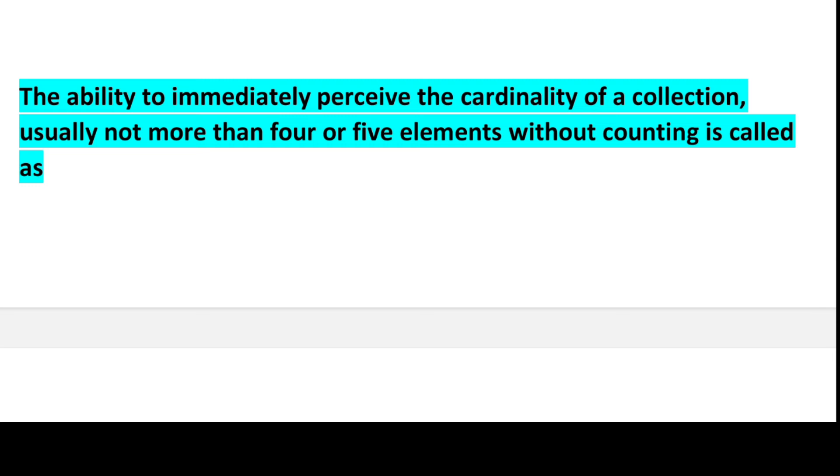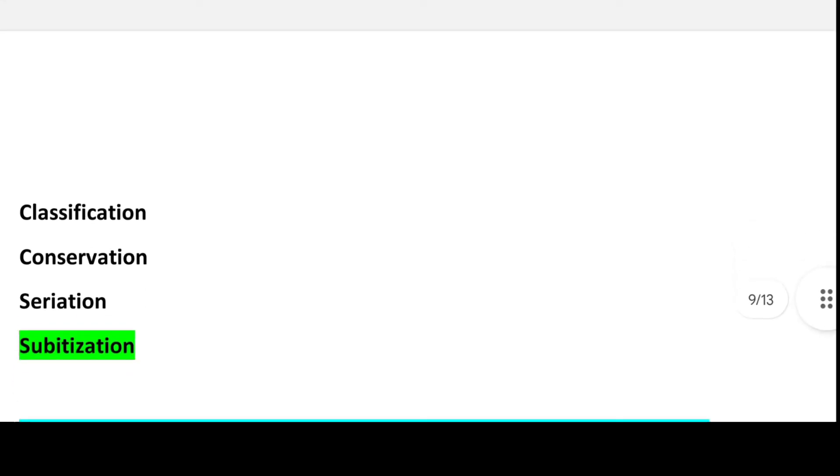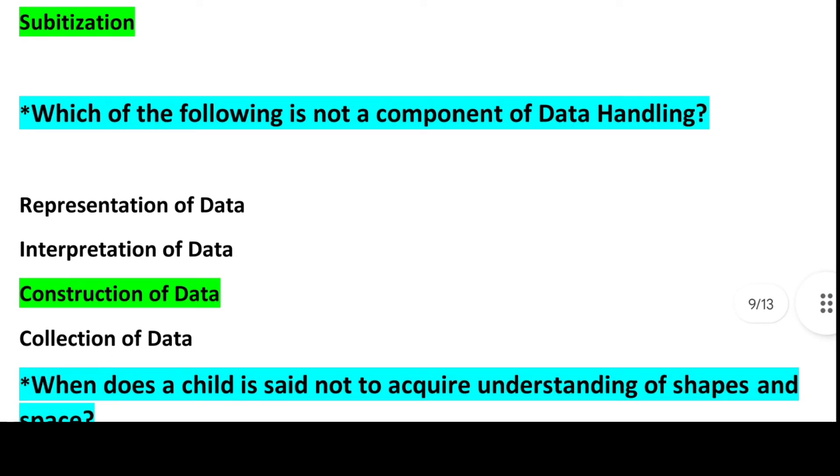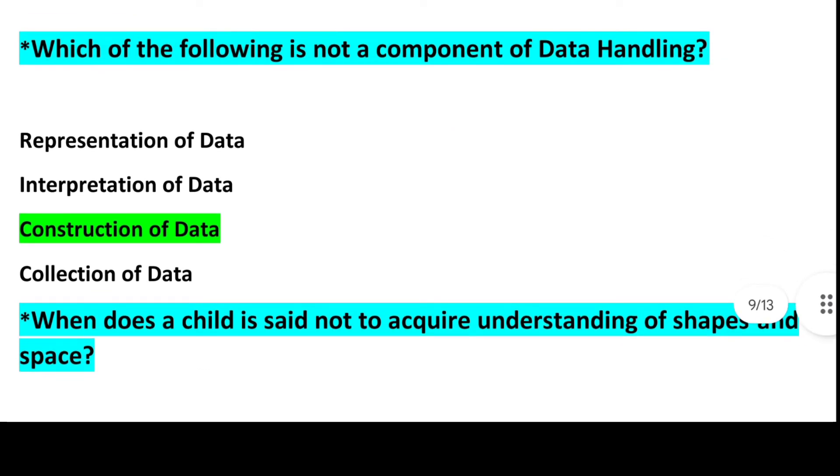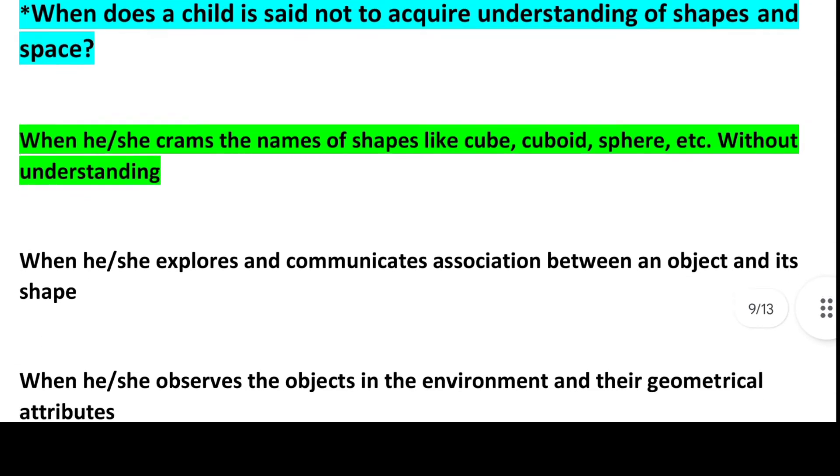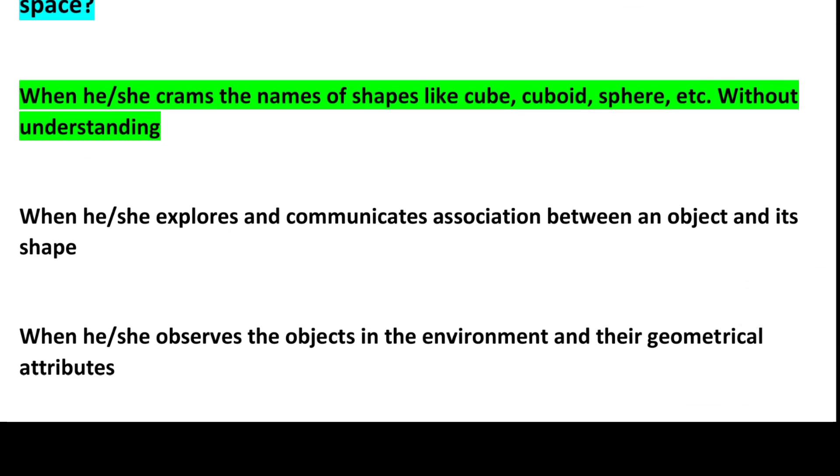Next: The ability to immediately perceive the cardinality of a collection, usually not more than 4 or 5 elements without counting, is called. Answer is Option 4, Subitization. Next: Which of the following is not a component of data handling? Answer is Option 4, Construction of data. Next: When is a child said not to acquire understanding of shapes and space? Answer is Option 1, When he or she crams the names of shapes like cube, cuboid, sphere, etc. without understanding.